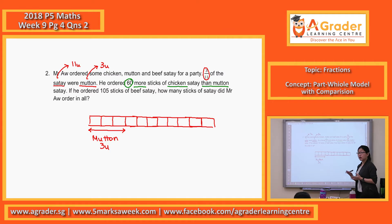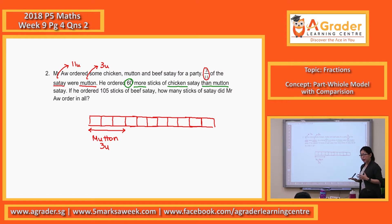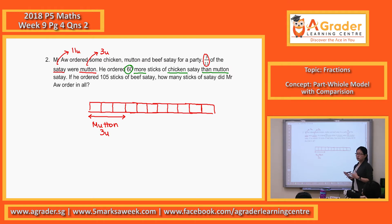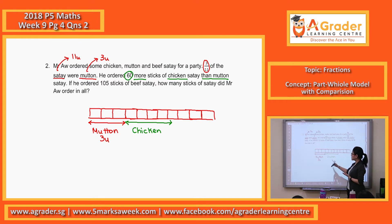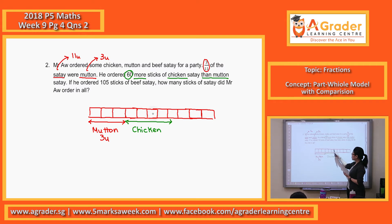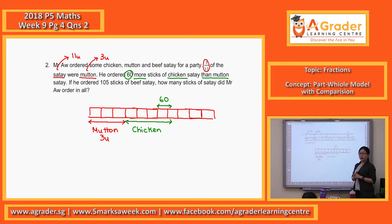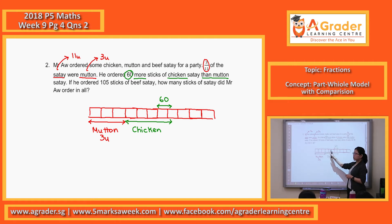They said the chicken satay will be 60 more than the mutton. In other words, it's 60 more than the 3 units. We won't know what 60 represents in units, so we'll just roughly gauge it — but of course we must draw it longer than 3 units. For chicken, I cannot put in the total units, but what I do know is it's 60 more than the 3 units. So the 3 units here, up to the part where I draw the arrow, this extra part will be 60. We don't put 60 with the 3 units.